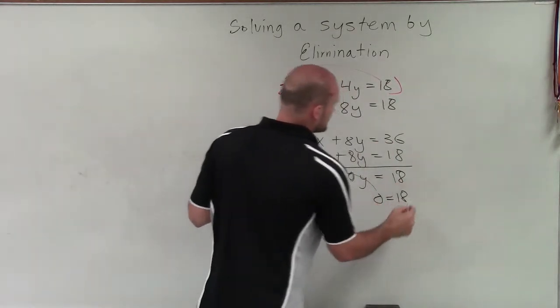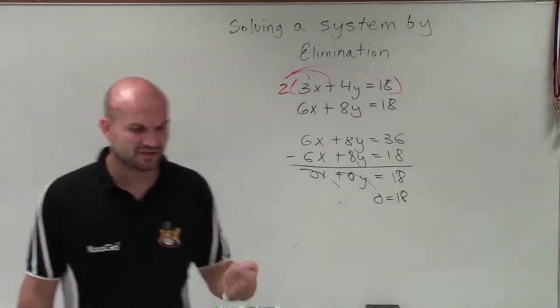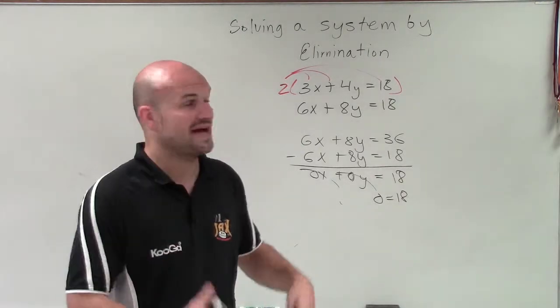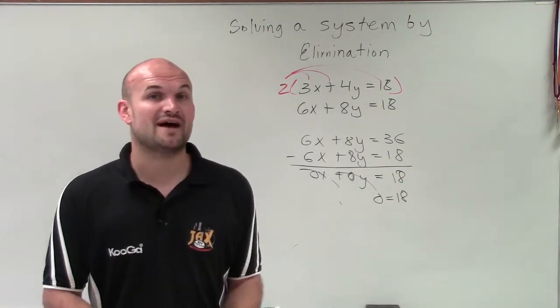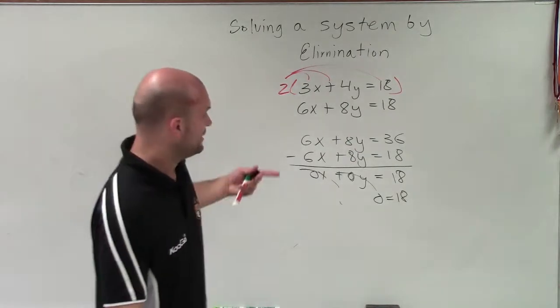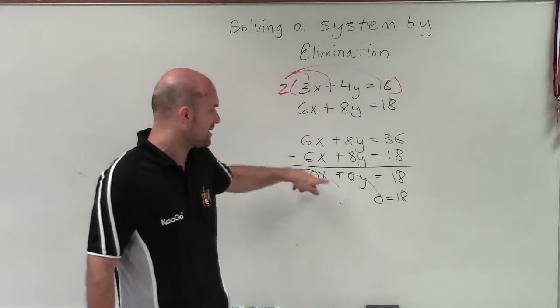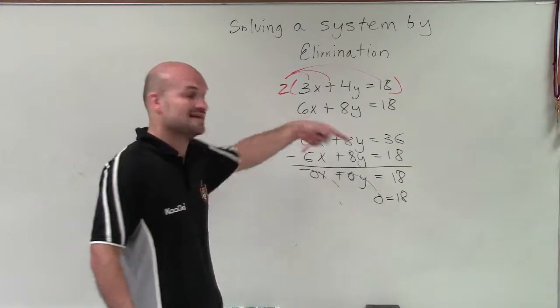But now I have an equation of 0 equals 18. Remember, when using elimination to solve a system, we're trying to find the value of x and the value of y. In this case, I don't have a value for x or y because I eliminated both.